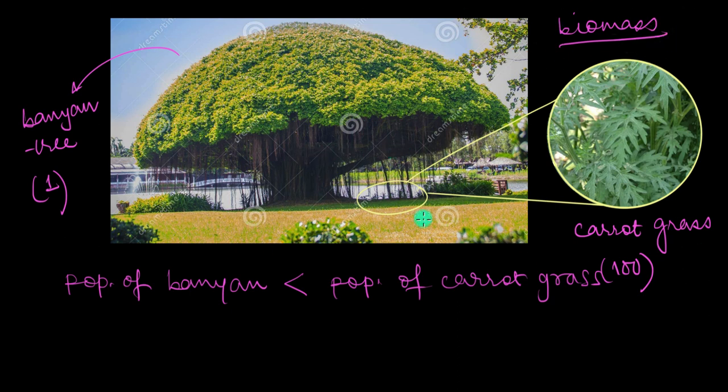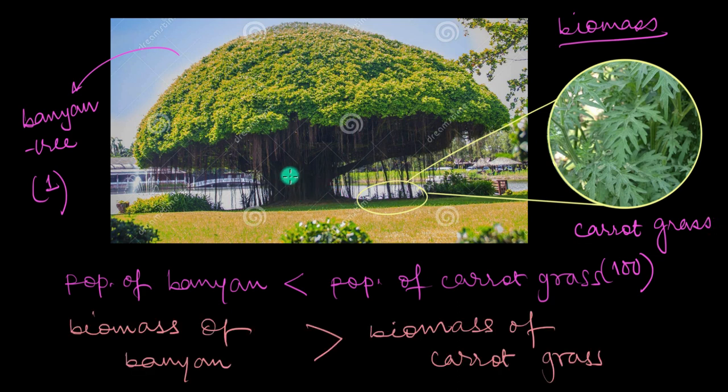And the biomass of this one huge banyan tree is much much higher than the biomass of these tiny carrot grass plants. Now the biomass per unit area that we measure, that's the biomass density of these populations. And the biomass densities, they give us a more accurate idea about the organisms' impact on the ecosystem over here. The plant biomass of any area is kind of like a reflection of the various resources that are being used by these plants, like the solar energy, nutrients and water.